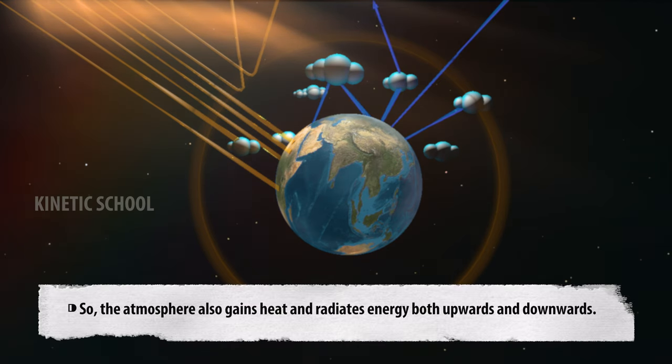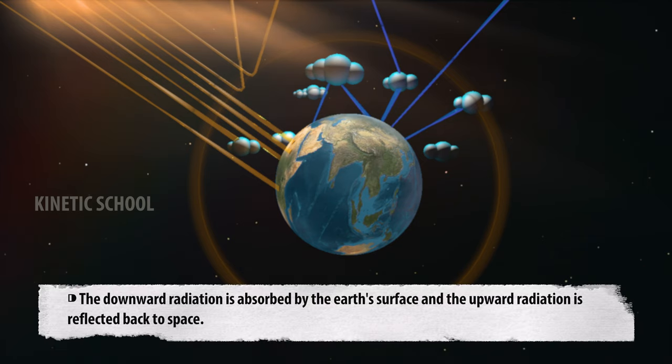So the atmosphere also gains heat and radiates energy both upwards and downwards. The downward radiation is absorbed by the Earth's surface, and the upward radiation is reflected back to space.